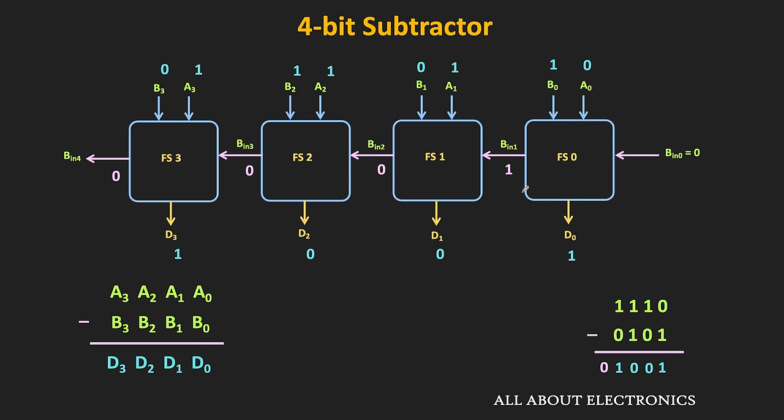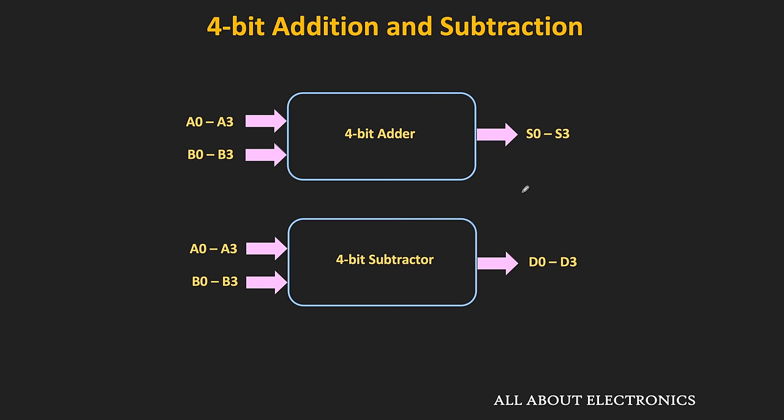As per this design, if we want to do both addition and subtraction of 4-bit numbers, then we require 2 separate circuits — one for addition and one for subtraction. Due to that, we require more logic gates, which increases the cost and complexity of the design. But what if we can perform both operations using a single circuit? That's exactly what we are going to see next — how to perform subtraction using the adder circuit.